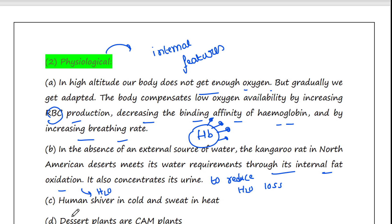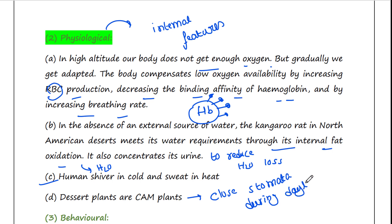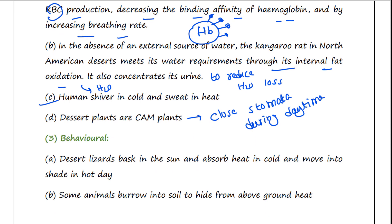Humans shiver in cold and sweat in heat as a physiological modification. Desert plants are CAM plants, which close their stomata during the daytime — this is a modification in photosynthesis. For behavioral adaptation, desert lizards bask in the sun to absorb heat when it is cold and move into shade on hot days. Some animals also burrow into soil to hide from above-ground heat.